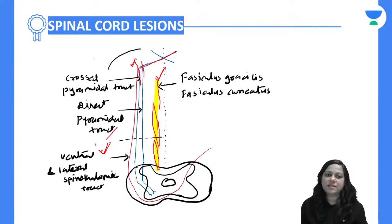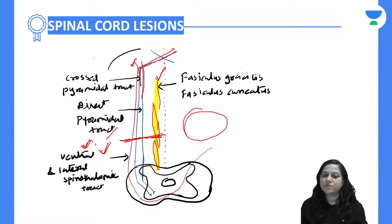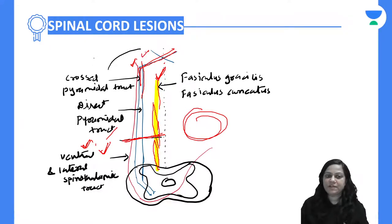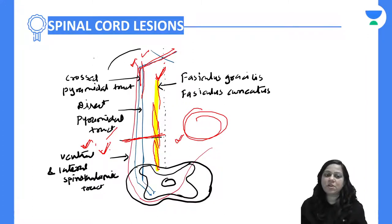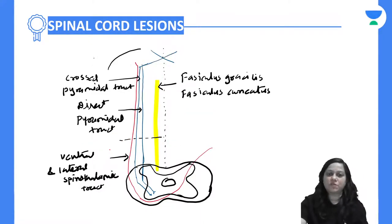If there is a cut on one side, the crossed pyramidal tract fibers are damaged, the ventral and lateral spinothalamic tracts carrying sensation from the opposite side of the body are damaged, and the dorsal column carrying sensation from the same side is also damaged. The direct pyramidal tract is damaged as well. So on the opposite side, sensations carried by ventral and lateral spinothalamic tracts are lost; on the same side, sensations carried by the dorsal column — fasciculus gracilis and fasciculus cuneatus — are lost.